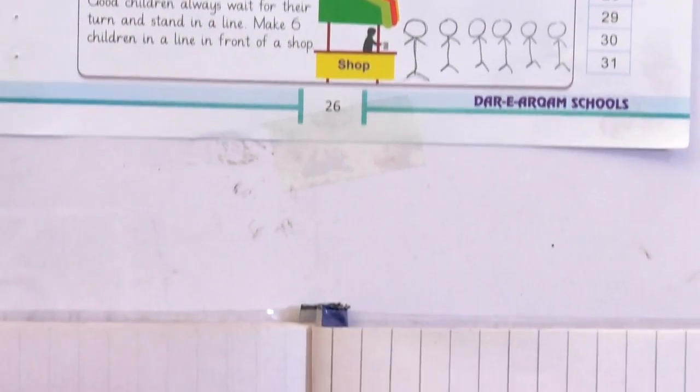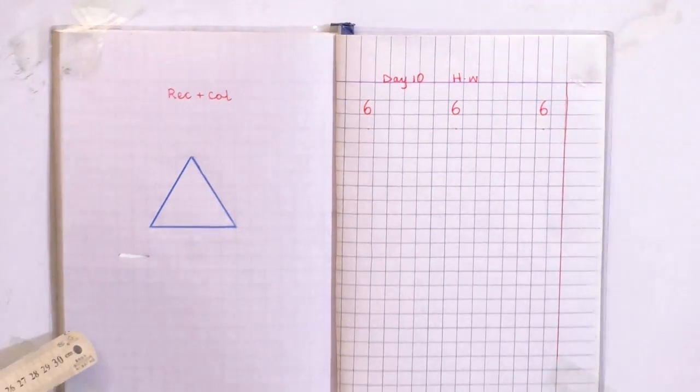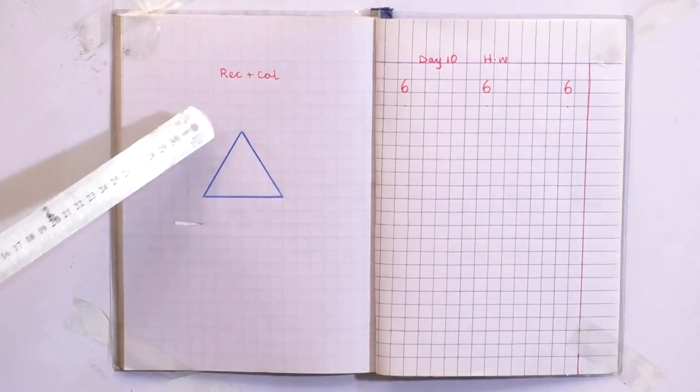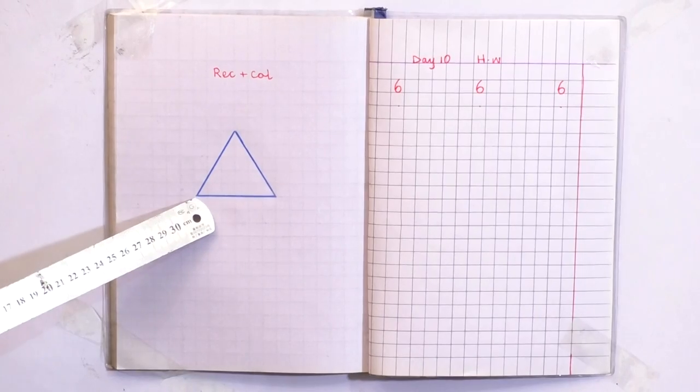My dear parents, kindly prepare the notebook like this for your children. This is a picture of a shape. Which picture is this? It's a triangle.